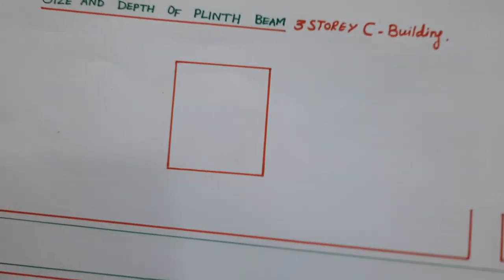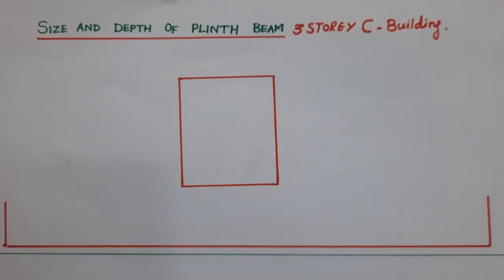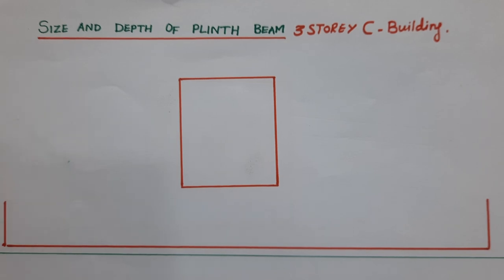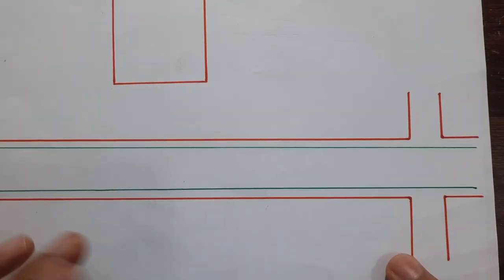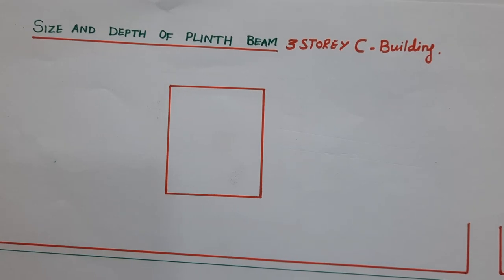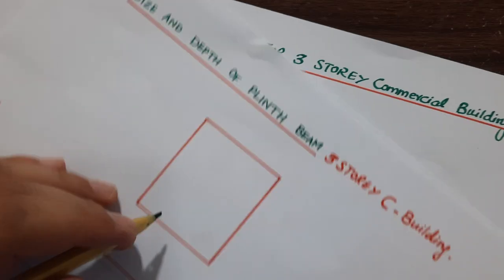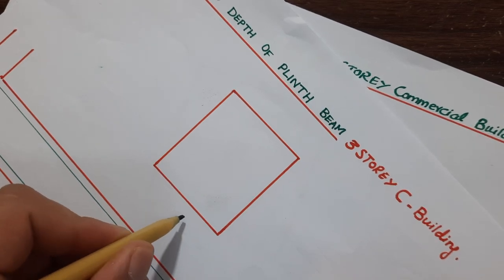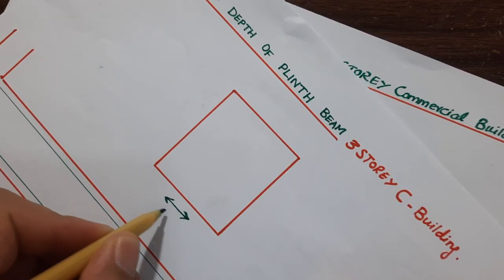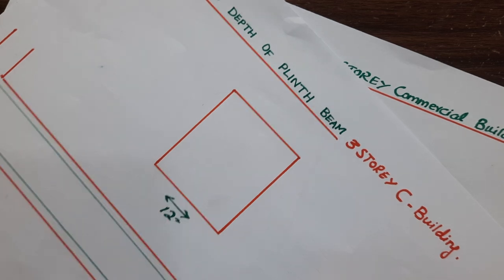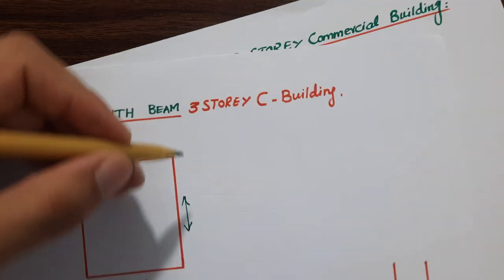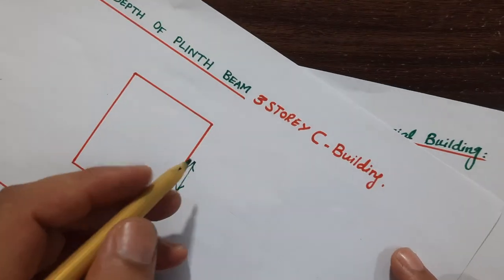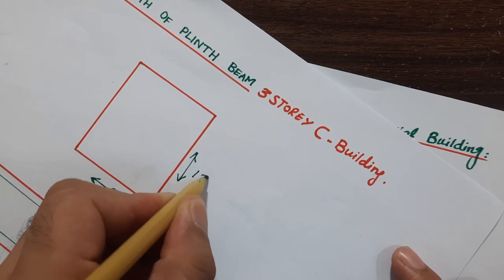First of all, I will guide you for the size of the column and also for the grade of concrete. As you can see, this is a section of the beam and this is its long section. You can see clearly the blue lines showing the steel reinforcement. The width of the beam is 12 inches, and the depth I determined based on structure load from my personal experience — 18 inches.